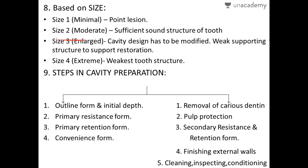By size: Size 1 is a minimal or point lesion. Size 2 is a moderate lesion with sufficient sound structure to retain the restoration. Size 3 is an enlarged cavity where the design must be modified for amalgam, composite, cast metal, or inlay preparation because the supporting structure is weak. Size 4 is an extreme cavity preparation where the tooth is largely decayed and may require a crown or capping.